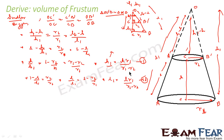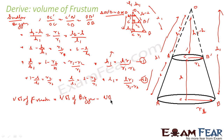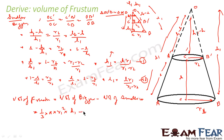Now, the volume of the frustum equals the volume of the bigger cone minus the volume of the smaller cone. If you take the big cone and subtract the small cone, you get the volume of the frustum. The volume of the bigger cone is 1/3 π R1² H1, minus the volume of the smaller cone.